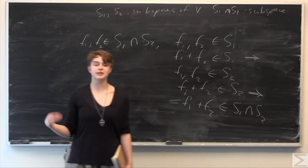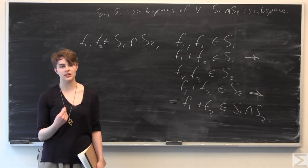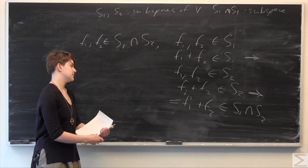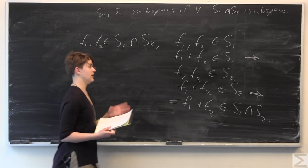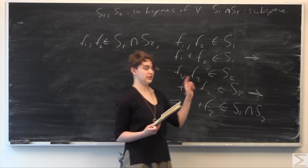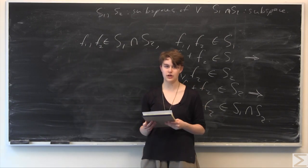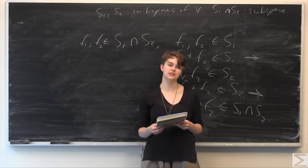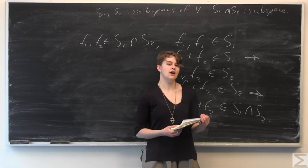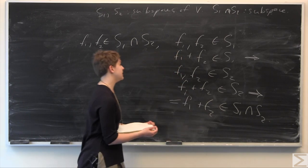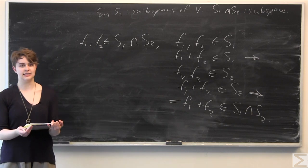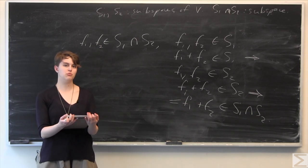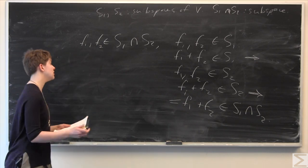That was the first property we were trying to prove in order to show that S1 intersect S2 is a subspace of V. The second property is closure under scalar multiplication, which we'll approach in rather the same fashion.